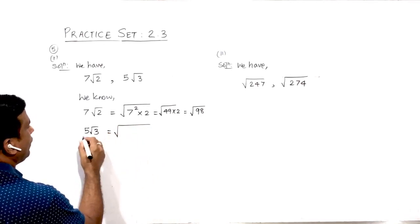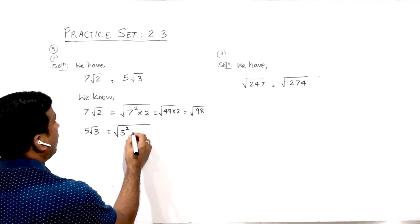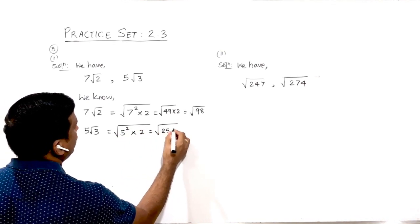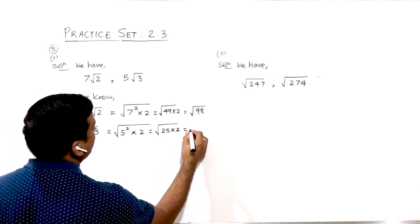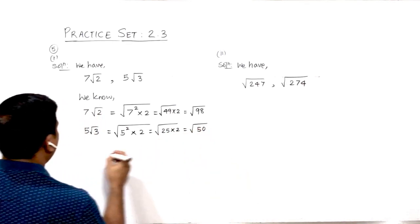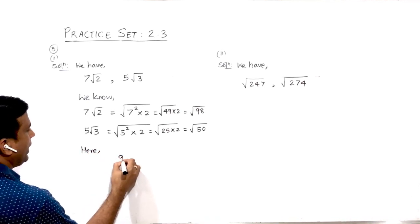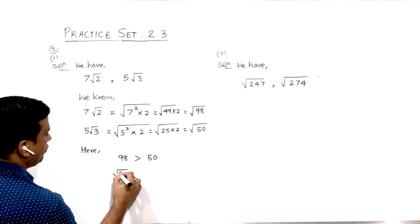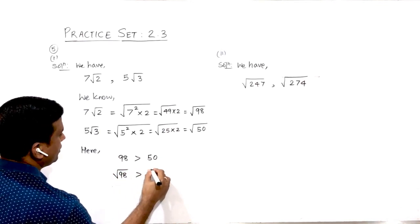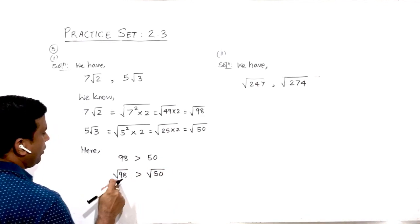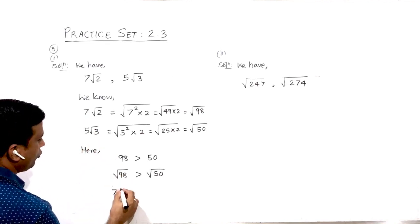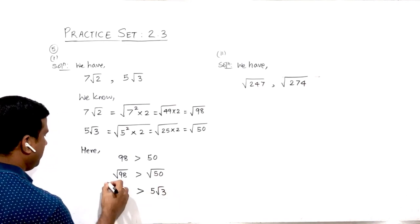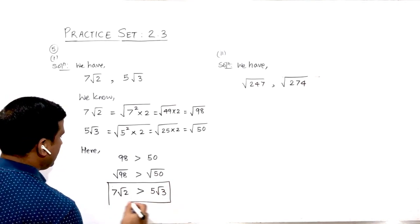Also, 5√3 can be written as — since the order is 2 — 5² × 3 = 25 × 3 = 75, giving √75. Now if you observe, 98 is greater than 75, therefore √98 is greater than √75, meaning 7√2 is greater than 5√3.